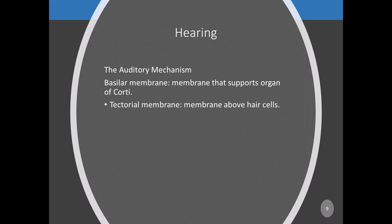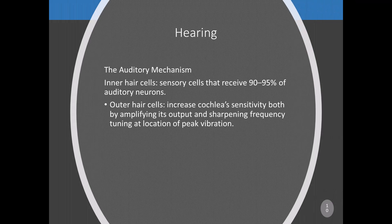Backward movement closes the channels and hyperpolarizes the membrane. Depolarization results in neurotransmitter release and stimulation of auditory neurons connected to hair cells, which are highly sensitive. Inner hair cells are sensory cells that receive 90 to 95 percent of auditory neurons and provide most of the information about auditory stimulation. When inner hair cells are destroyed by chronic exposure to loud sounds, disease, or certain drugs, they are not replaced. Outer hair cells increase cochlea sensitivity by amplifying its output and sharpening frequency tuning.